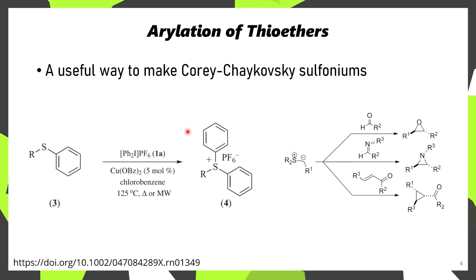Let's start with the arylation of thioethers. If you take a diaryl iodonium, such as this diaryl iodonium hexafluorophosphate, it's possible to arylate an aryl thioether to get the corresponding sulfonium. This reactivity is accelerated by the presence of metal catalysts such as copper benzoate, as is shown here, and the resulting sulfonium, if it contains an alpha proton, can be deprotonated to prepare the corresponding sulfonium ylid.